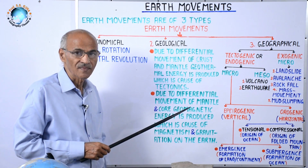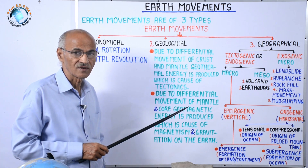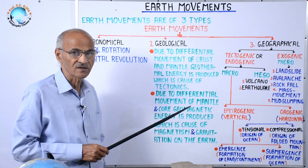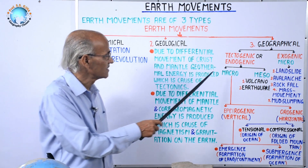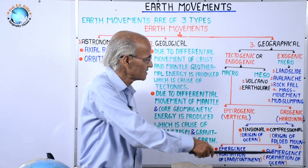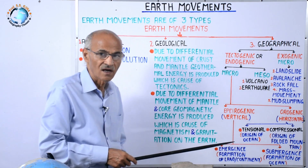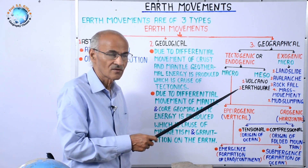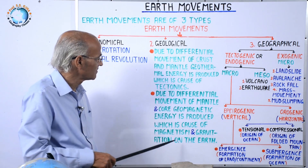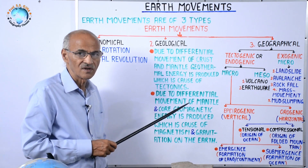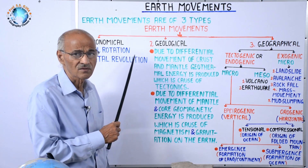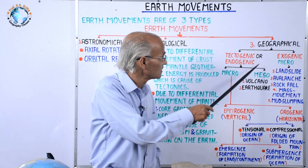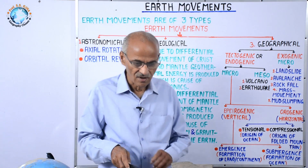These are the different types of earth movement. For geography students, especially from the UPSC perspective, the main emphasis should be on geographical earth movement — particularly meso and micro levels. These can be written briefly in 50 words or 20 to 25 words respectively, but the lion's share of focus goes to geographical earth movement.